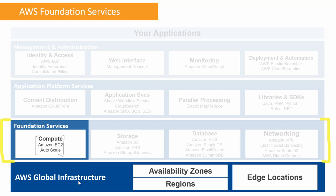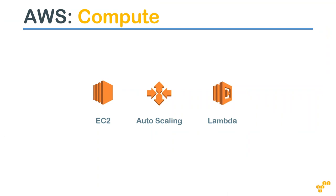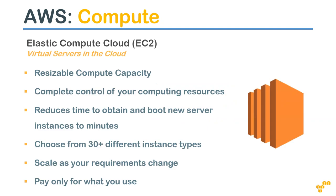Let's see what EC2 means. EC2 is the Elastic Compute Cloud - it is nothing but virtual servers in the cloud. In your on-premise world you might have been creating LDOMs in Solaris, LXC in the Linux world, or using Hyper-V in Windows to create virtual machines.